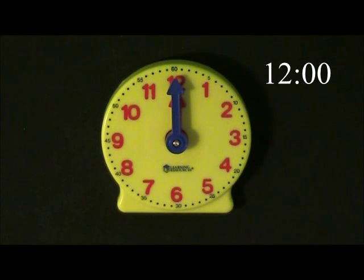We write time by writing the hours first and then the minutes. We put a colon in between the hours and the minutes so that we can tell them apart.